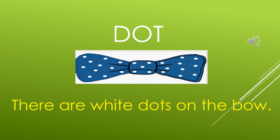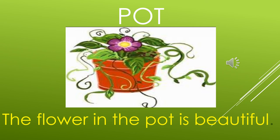So the sentence is: there are white dots on the bow. The next one — pot. Can you see this flower pot? The flower is there. The flower in the pot is beautiful. The brown color pot. I'm sure all of you who like gardening will have these pots. So the sentence is: the flower in the pot is beautiful. Now we have done a few words and sentences with OT.